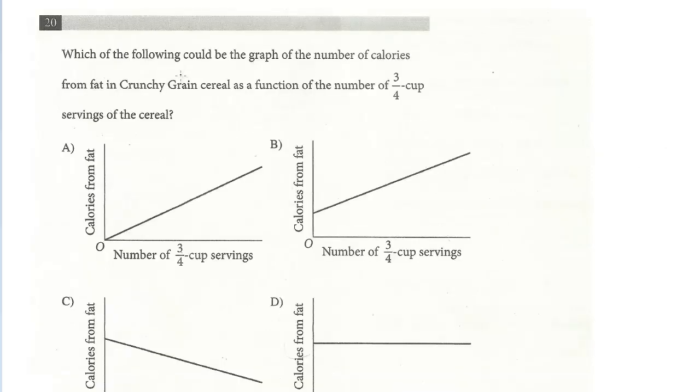Which of the following could be the graph of the number of calories from fat in crunchy grain cereal as a function of the number of three quarter cup servings? Okay. So we're just talking about the total number of calories from fat in crunchy grain as a function of the number of cups. Before you even go back to the information, we know that if you have zero cups, you're going to have zero calories from fat. But as it increases, the number of three quarter cups, you're definitely going to increase the number of fat.